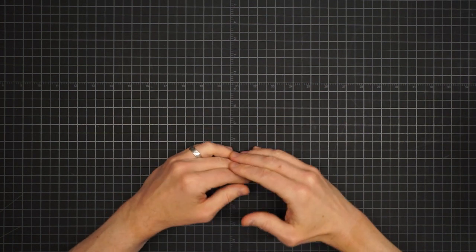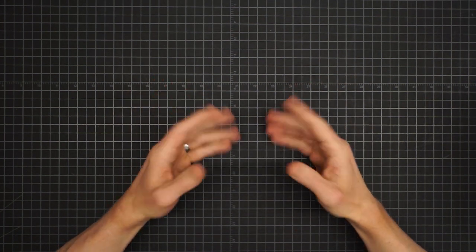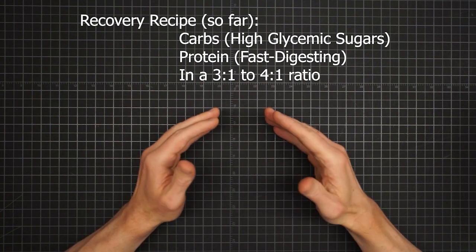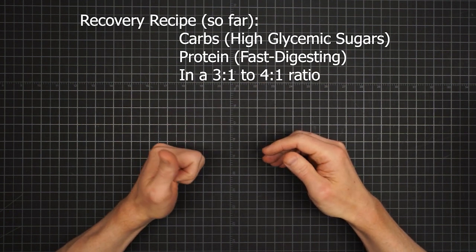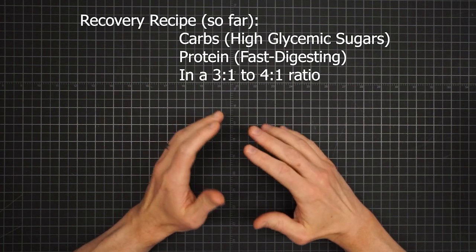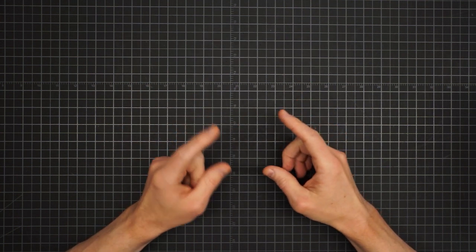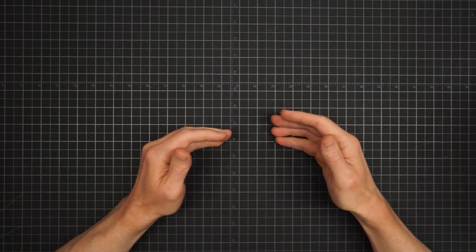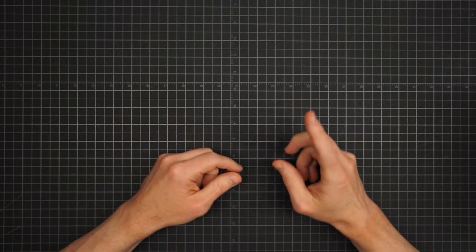Okay, so our recovery cocktail recipe is almost complete. We know we want carbs, specifically in the form of high glycemic sugars, and a fast-digesting protein, in a ratio between 3 and 4 to 1. There's just one more concept to introduce so we can pick exactly which kinds of sugar to use, because metabolically speaking, not all sugars are the same.